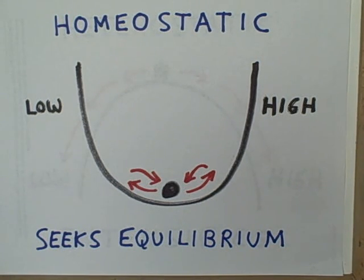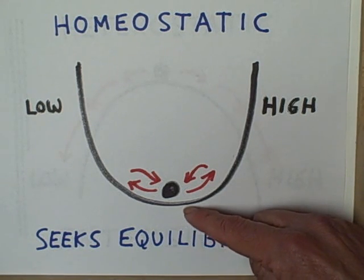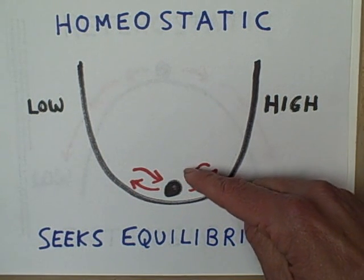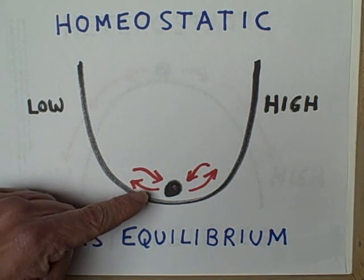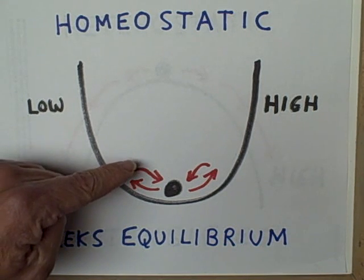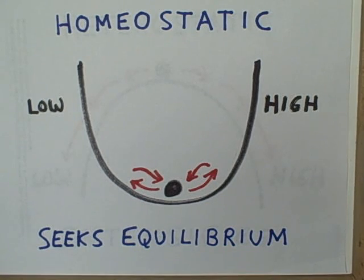A good example of a homeostatic system would be a thermostat. If the temperature in the house gets too high, the air conditioning comes on and brings the temperature back down to our desired set point — a comfort zone. If the temperature gets too low, the heater comes on and brings the temperature back up to our desired set point.